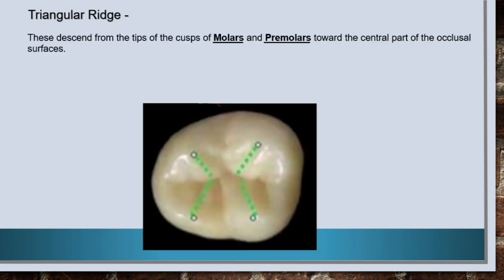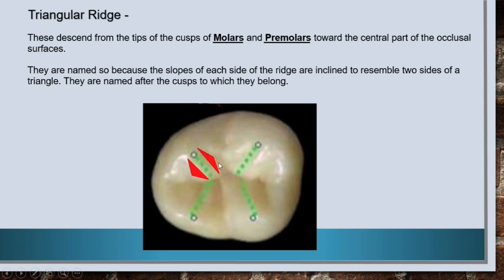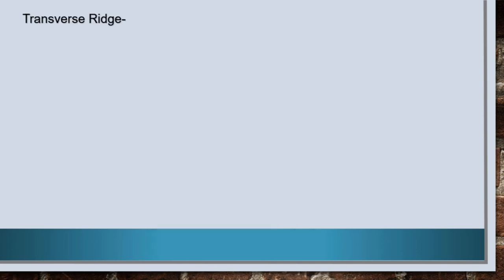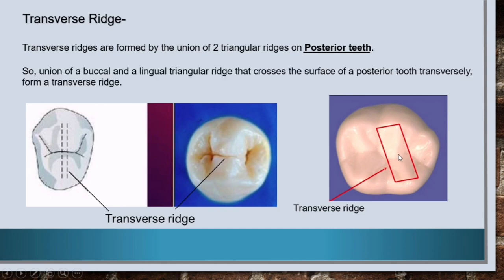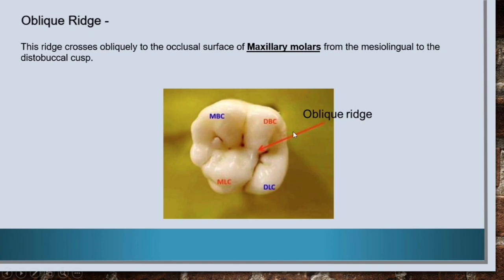Now let's have a look at ridges named according to their shapes. First is triangular ridge. These descend from the tips of the cusps of molars and premolars towards the central part of the occlusal surfaces, and they are named so because the slopes of each side of the ridge are inclined to resemble two sides of a triangle. They are named after the cusp to which they belong. Second is transverse ridge, formed by the union of two triangular ridges on posterior teeth — a buccal and a lingual triangular ridge crossing the surface transversely. Third is oblique ridge, which crosses obliquely on the occlusal surface of maxillary molars from the mesiolingual to the distobuccal cusp.